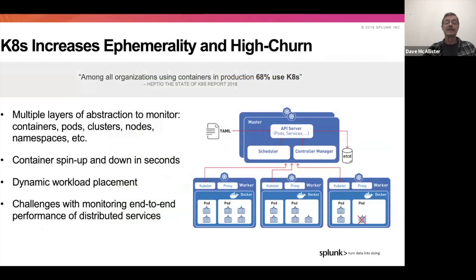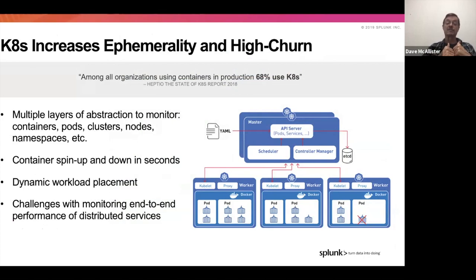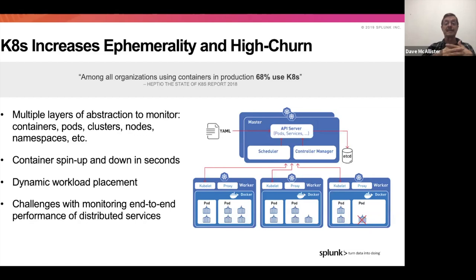Kubernetes increases the ephemeral nature as well as the churn rate. Kubernetes is heavily in use — 68% are using it in production per the 2018 report. It adds multiple levels of abstraction to monitor: containers, pods, clusters, nodes, namespaces. Things can happen in seconds — containers can spin up or down. Dynamic workload placement means you don't know where something is going to be placed. You end up with challenges around monitoring end-to-end performance of distributed services. Service meshes have also shown up to help control this end-to-end performance, but they add yet another level of complexity.